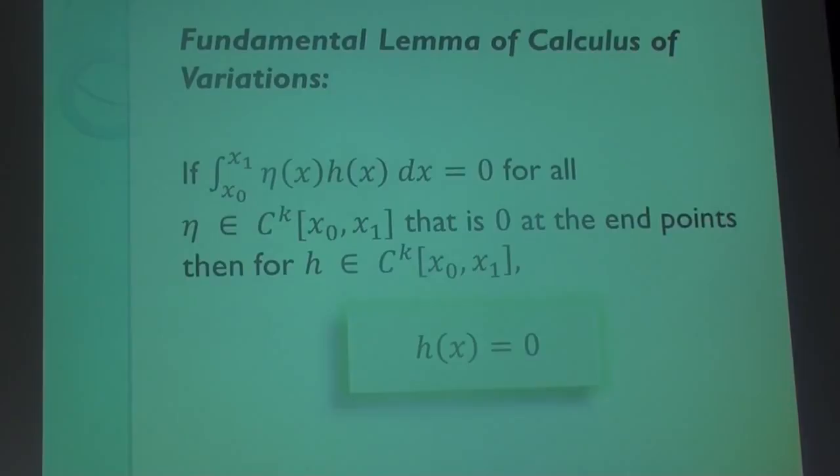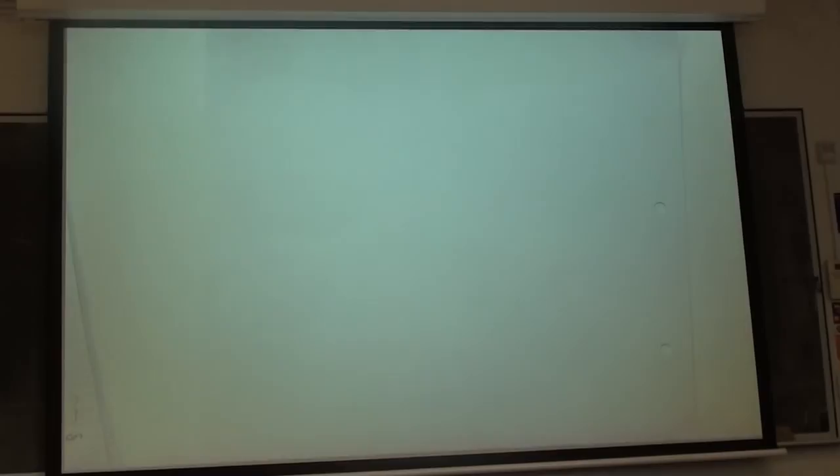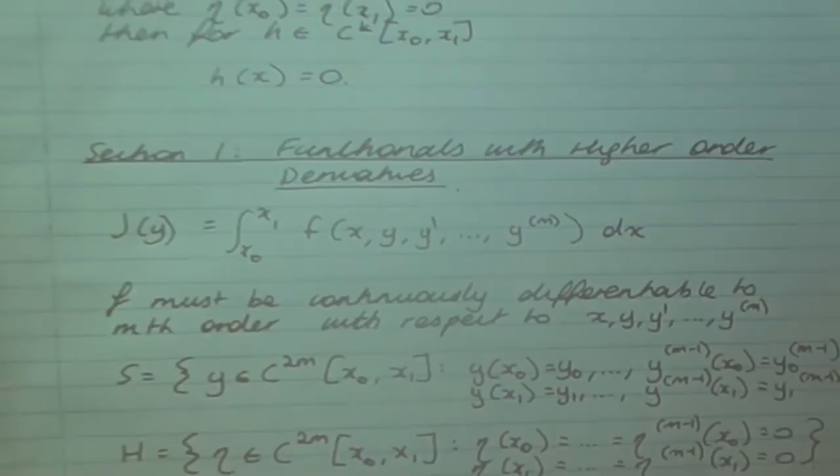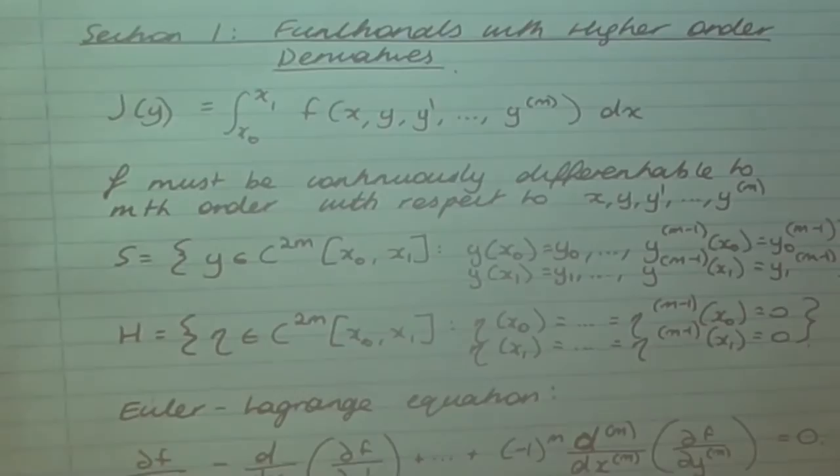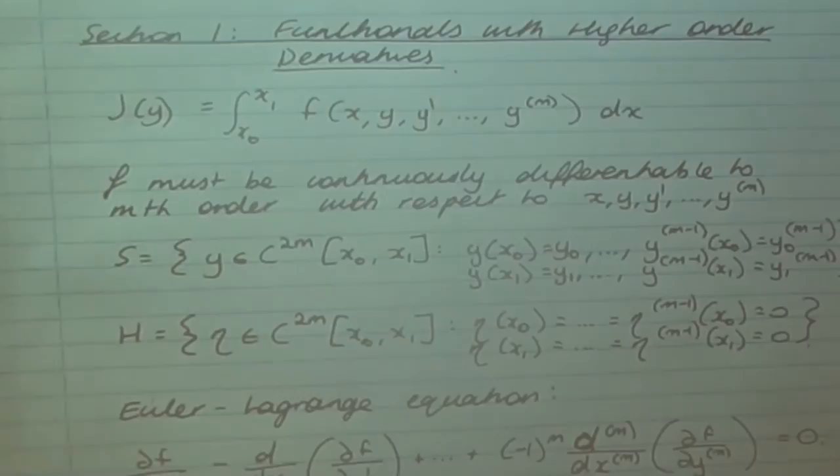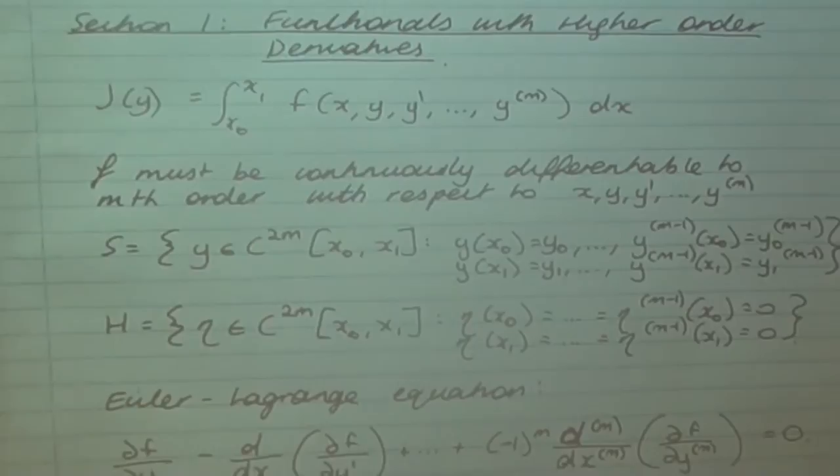In the book they do the derivation up to the second derivative, but generalising out to the nth derivative isn't any more difficult — there are just some stronger assumptions to make along the way. On the sheet I've given you, this is our functional. The first assumption is that f, our integrand, has to be continuously differentiable up to the nth order with respect to each component: x, y, y', all the way up to the nth derivative. That's important because of the way we need to differentiate f to actually get to our Euler equation. S is the set in which we find our y function.